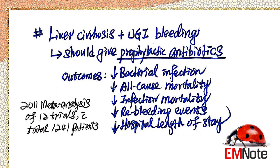Antibiotics for cirrhotic patients with upper GI bleeding: Many studies have suggested that prophylactic antibiotic therapy decreases bacterial infection rate, re-bleeding, and in-hospital mortality in cirrhotic patients with upper gastrointestinal bleeding. Antibiotics should be used for prophylaxis in hospitalized patients with cirrhosis and upper gastrointestinal bleeding.